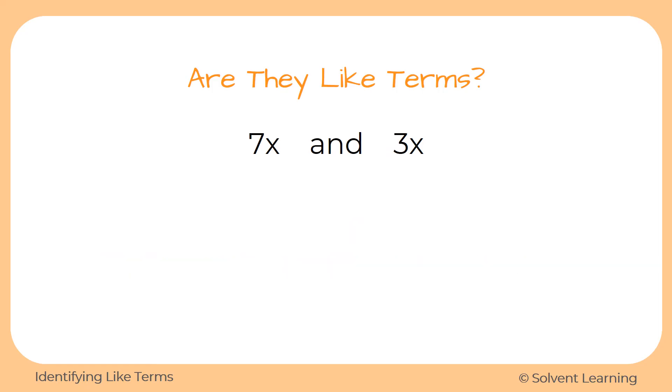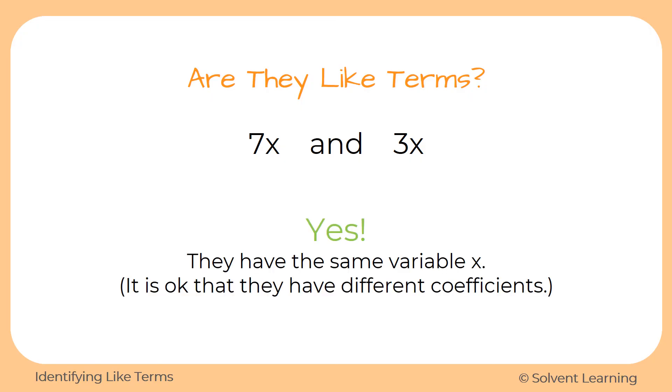Now we have 7x and 3x. They both have the same variable x. They have different numbers, different coefficients, but that's okay. They can have different coefficients. When we're trying to figure out if terms are like or not, we're really just paying attention to the variable part. If there's a variable there, they have to have the same thing going on with their variable in order for them to be like terms. So, yes, these are considered to be like terms because they do have the same variable x. And it's okay that they have different coefficients.